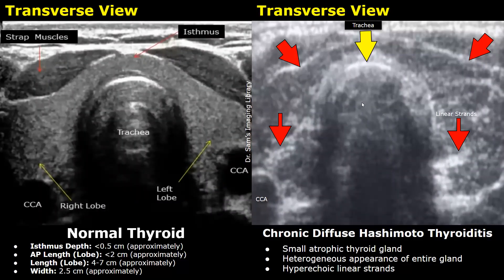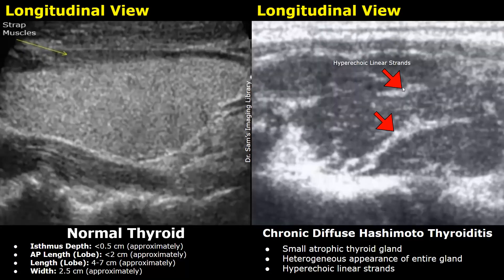In chronic cases of Hashimoto thyroiditis, the thyroid shrinks in size and has a heterogeneous appearance. The hyperechoic linear strands are more prominent in chronic stages. In this longitudinal view, you can see various hyperechoic strands. In chronic Hashimoto thyroiditis, the size of the thyroid decreases and the gland may become avascular on color Doppler.